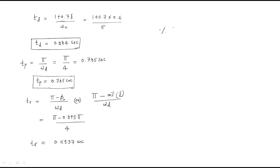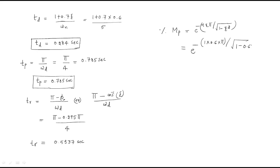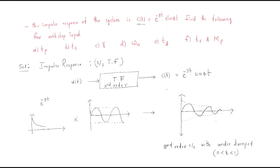Finally, we find the peak overshoot. The formula is: Mp = e^(-πζ / √(1 - ζ²)). Substituting n = 1, ζ = 0.6: Mp = e^(-π × 0.6 / √(1 - 0.36)) = e^(-π × 0.6 / 0.8). The percentage peak overshoot equals 9.5%. This completes the solution for the given problem. I hope all of you understand this session. Thank you.